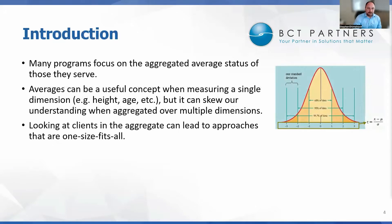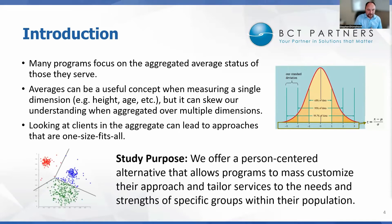Many programs focus on an aggregated average status of those that they serve. Averages can be a useful concept if you're measuring a single dimension, like height or age, but it can skew our understanding when aggregated over multiple dimensions. Putting a bunch of averages together into some sort of universal measure can lead to one-size-fits-all approaches. Our purpose was to offer a person-centered alternative that would allow a program to mass-customize their approach and tailor their services to meet the needs and strengths of specific groups within their population.